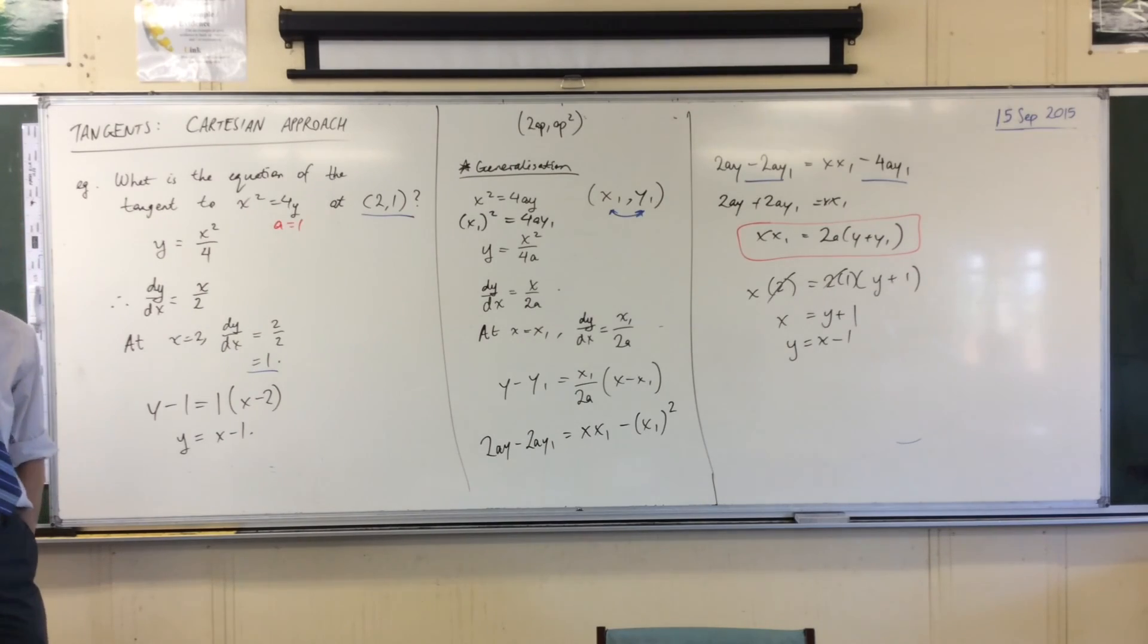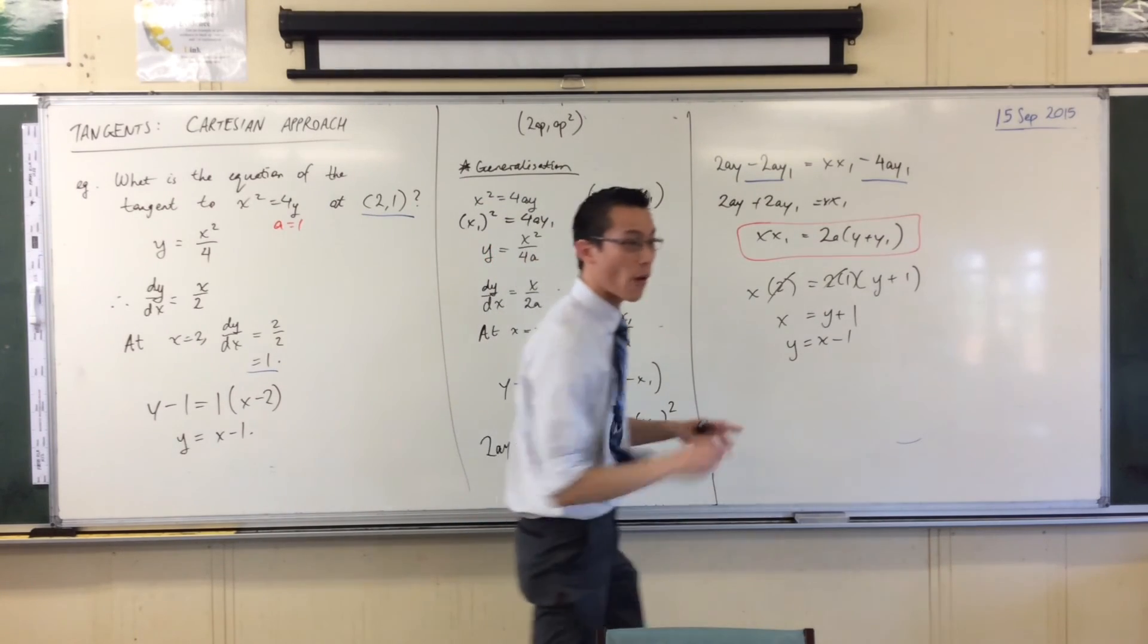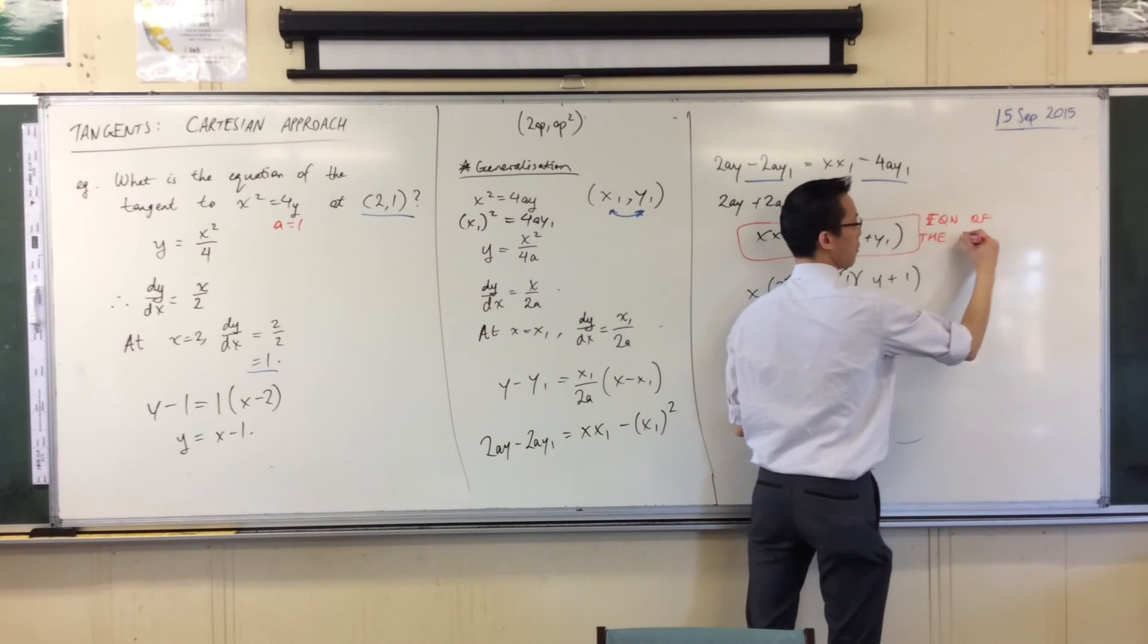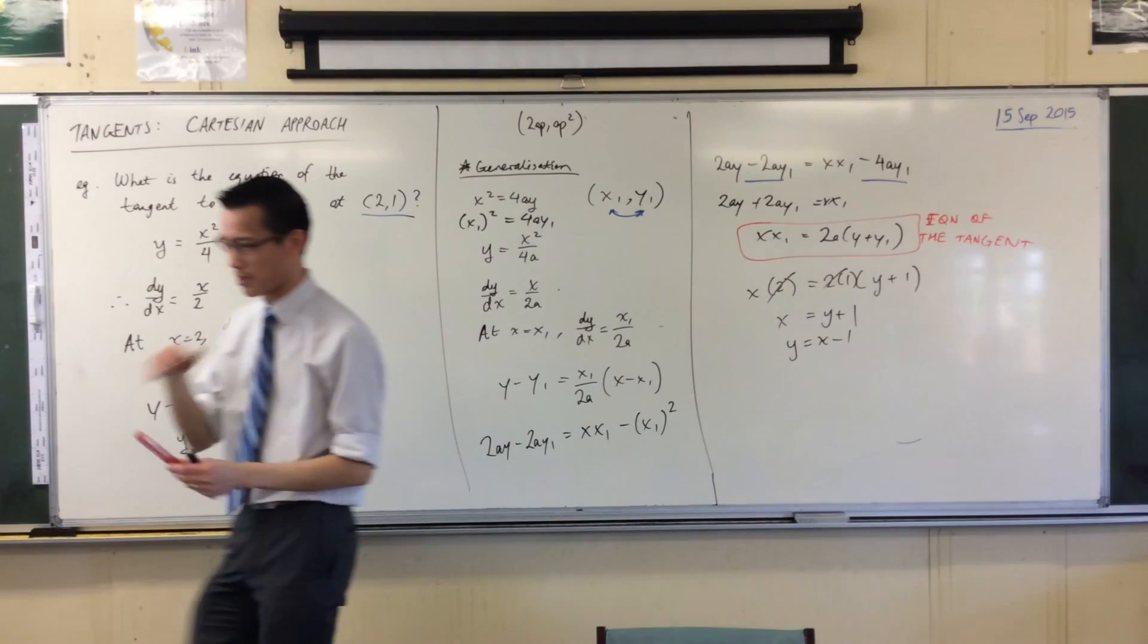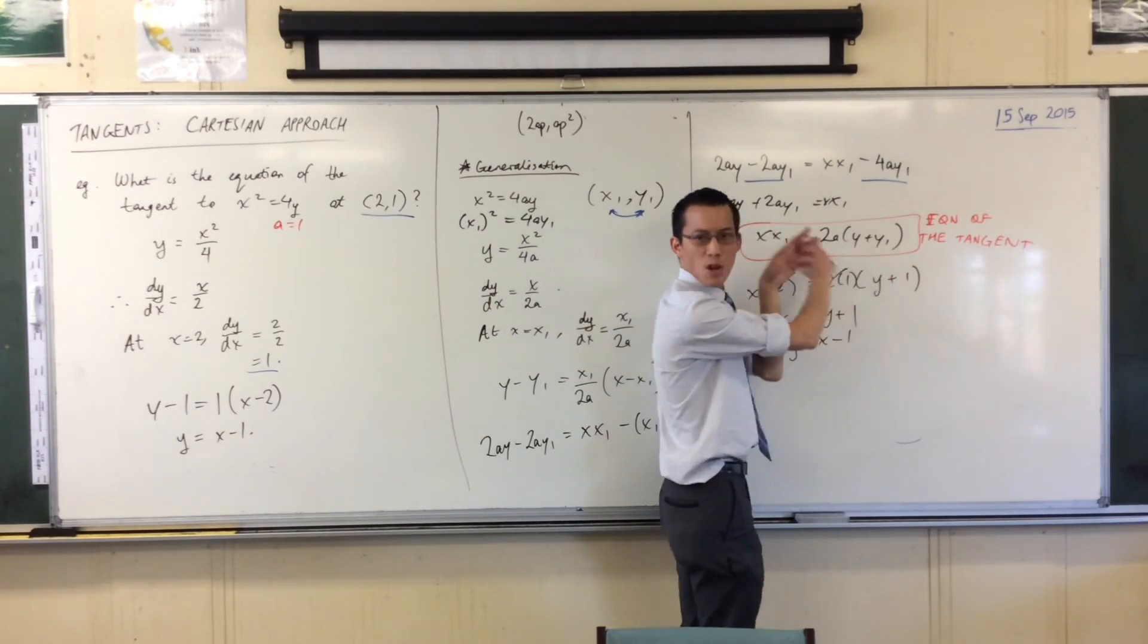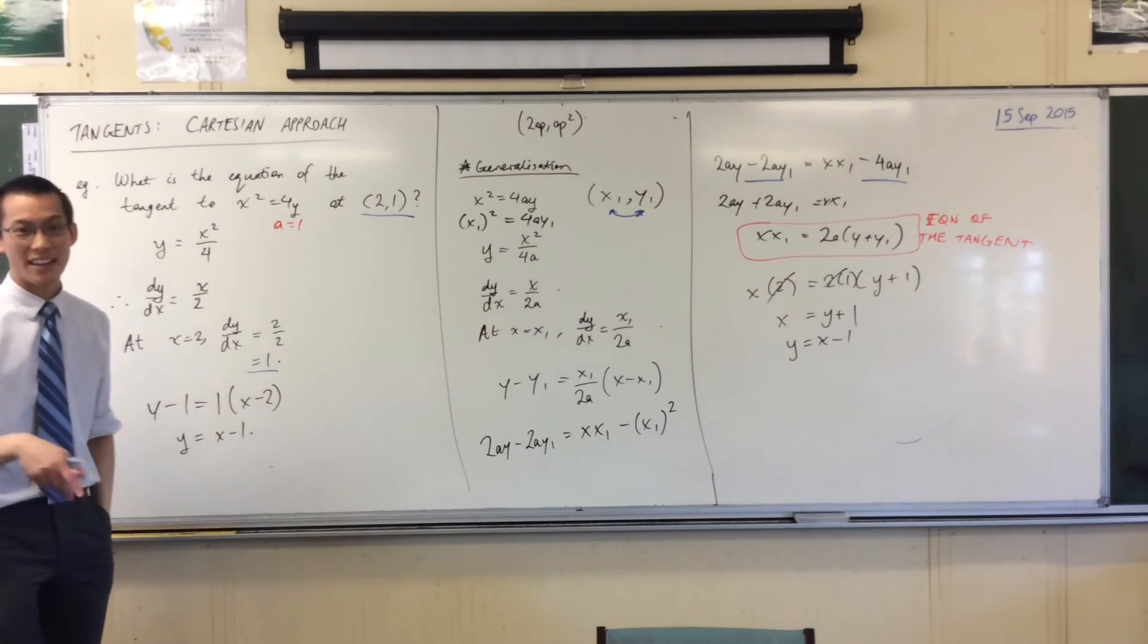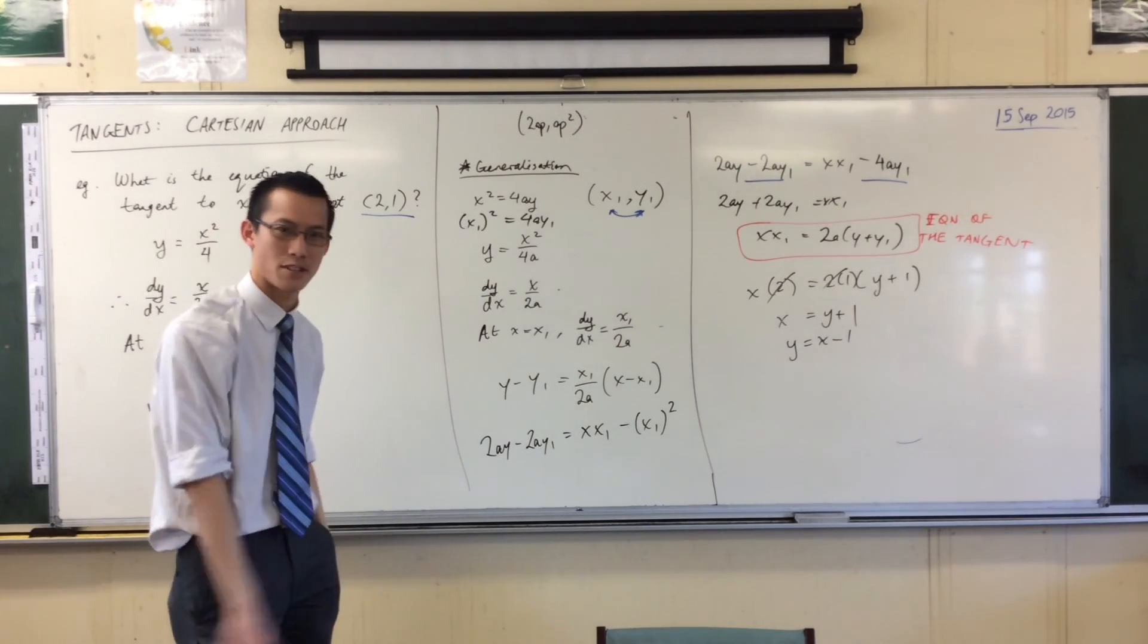Now, speed and efficiency are one of the strengths of this equation here. This is the equation of the tangent in Cartesian form. If you like, you can put it next to Y equals PX minus AP squared, which is your parametric form of the same thing. But you can see it feeds in quite different information. There's no parameters here. So that's how you remember. This is not the parametric form. Now, like I said, speed and efficiency are one of the good things about this, but there's even more cool stuff and we'll find out about it tomorrow. Thank you.